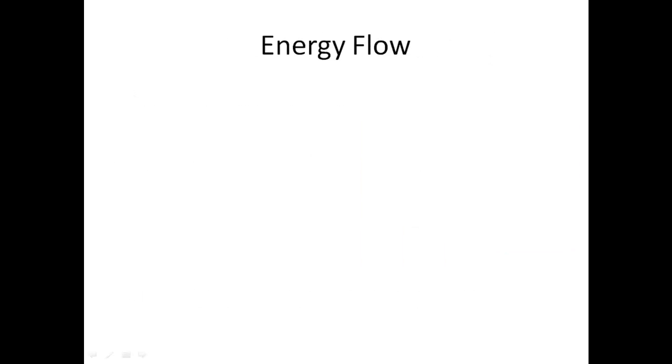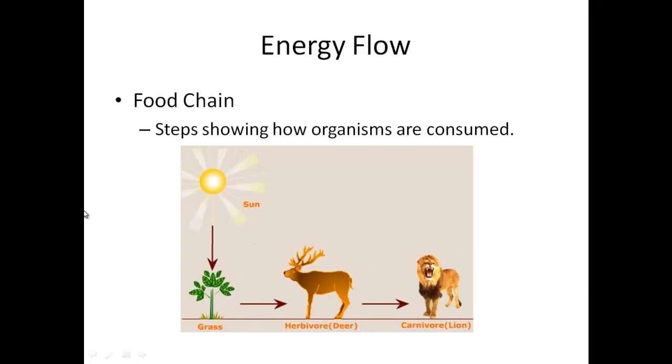So now we're going to talk about how our energy flows from the producers to the consumers. We can show our energy flow a few different ways. First, we can use a food chain. This is steps showing how organisms are consumed. We start off with our sun, which is our main source of energy. And then our energy flows through our producers, our energy flows to our herbivores, our energy flows through our carnivores. Pay attention to the direction of the arrows. The arrows show how the energy moves, not what eats what.